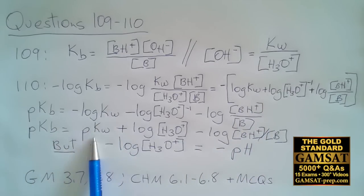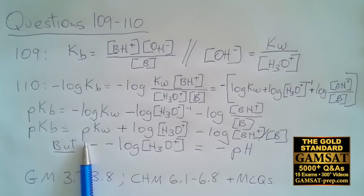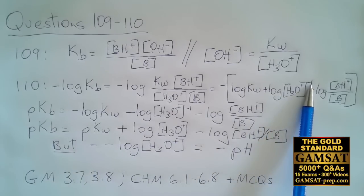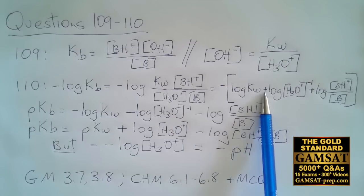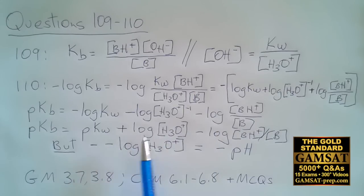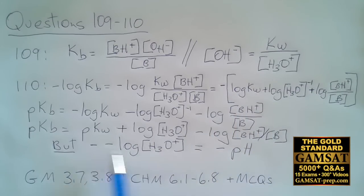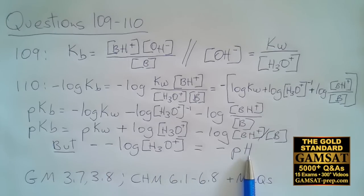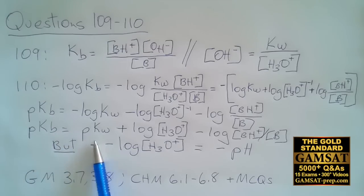Negative log Kw is pKW — just like negative log of [H⁺] is pH, negative log OH⁻ is pOH, and negative log KA is pKA. That little 'p' represents negative log. For the log term, the exponent of minus 1 comes down to the front, making it negative log H3O+, but then the negative sign from before makes that a negative of a negative — so it becomes plus log H3O+. Negative log H3O+ is pH, so we really have negative pH.